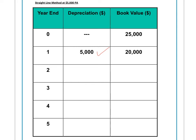In year one, the total depreciation equals the annual depreciation because it's only been depreciated for one year. The historic cost is $25,000, total depreciation is $5,000, which means the net book value of the asset is $20,000.